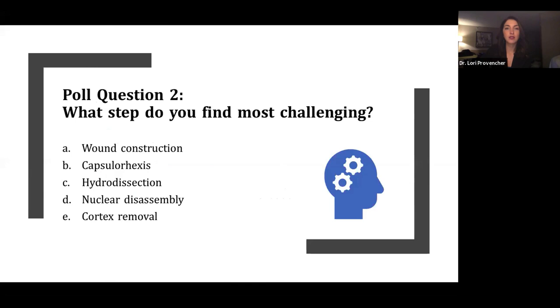We'll do another question here. What step do you find most challenging with FACOS surgery? Is it wound construction, capsulorexis, hydrodissection, nuclear disassembly, or cortex removal? And it looks like the vast majority of you find nuclear disassembly challenging about 60%, and then about a quarter say capsulorexis.